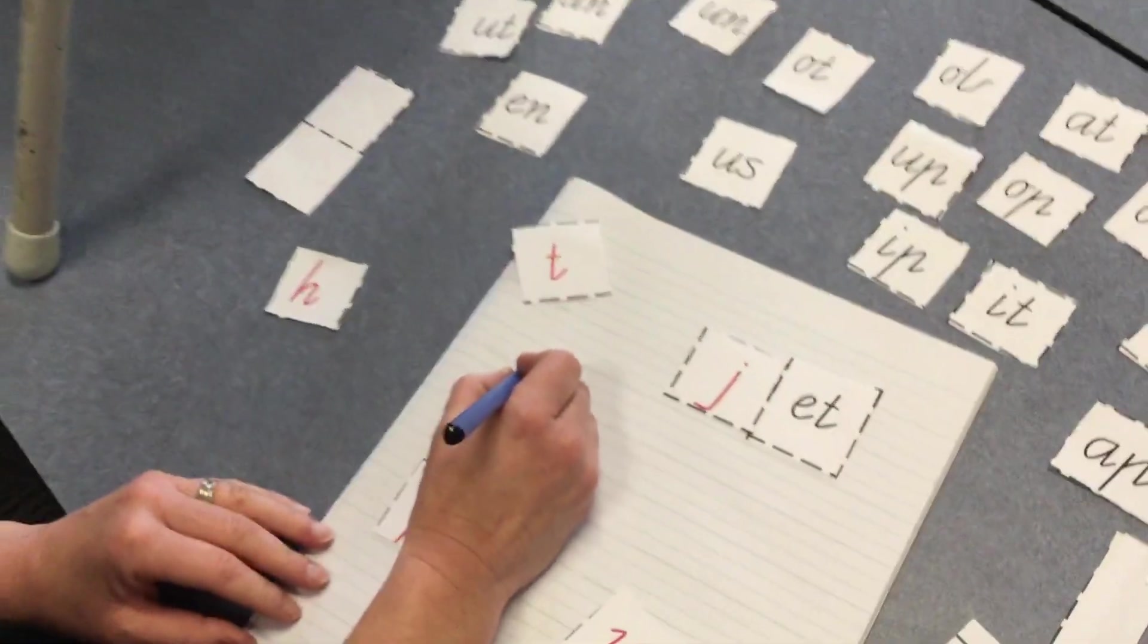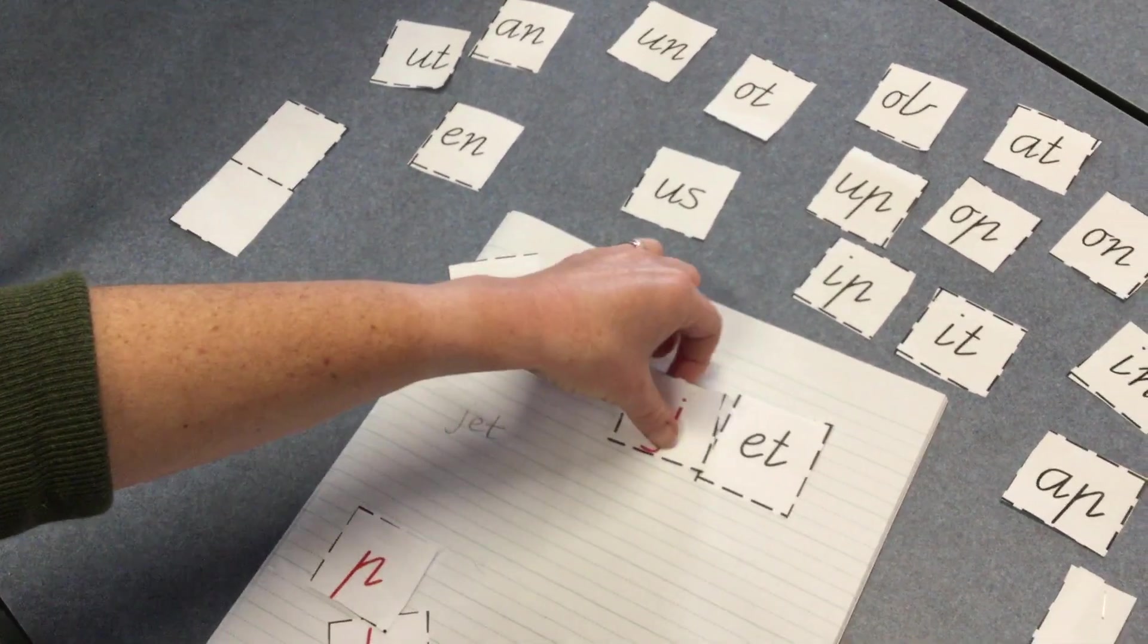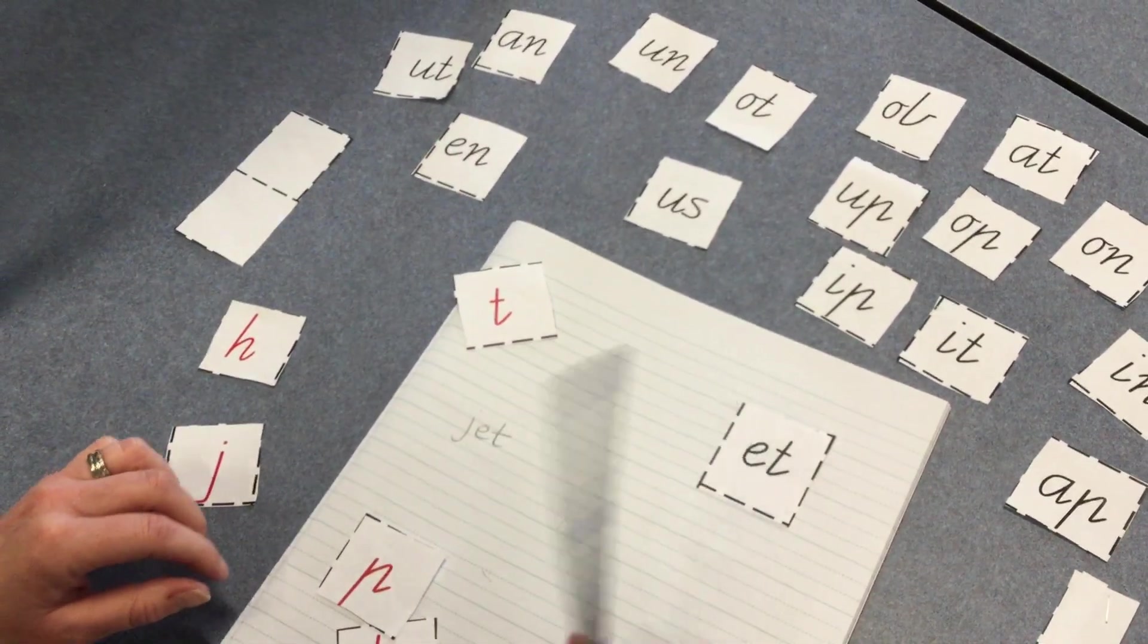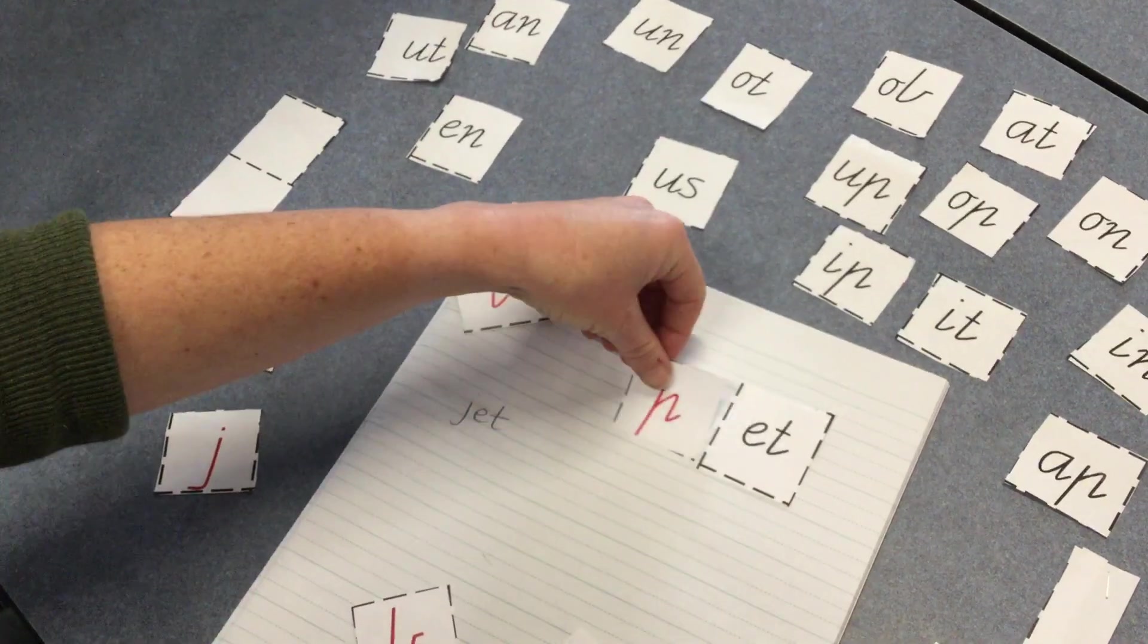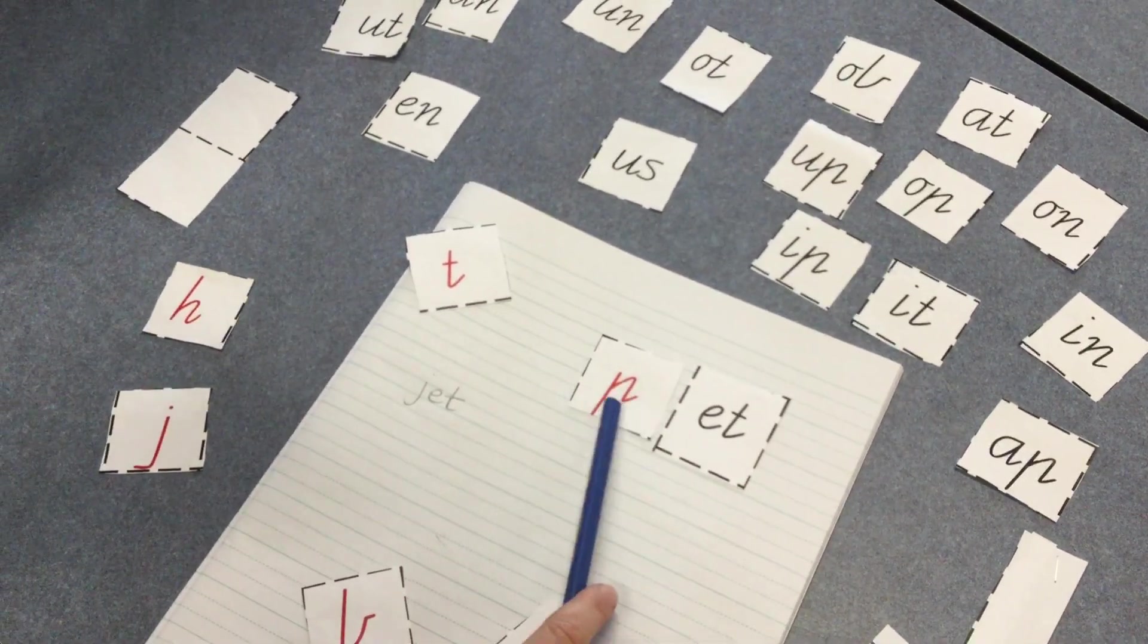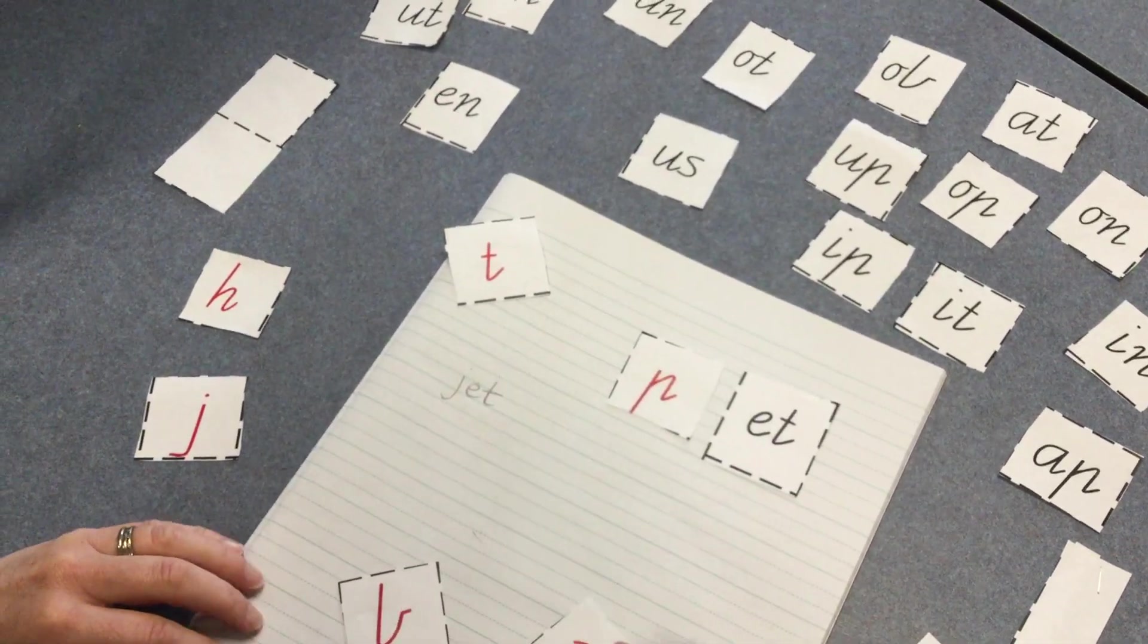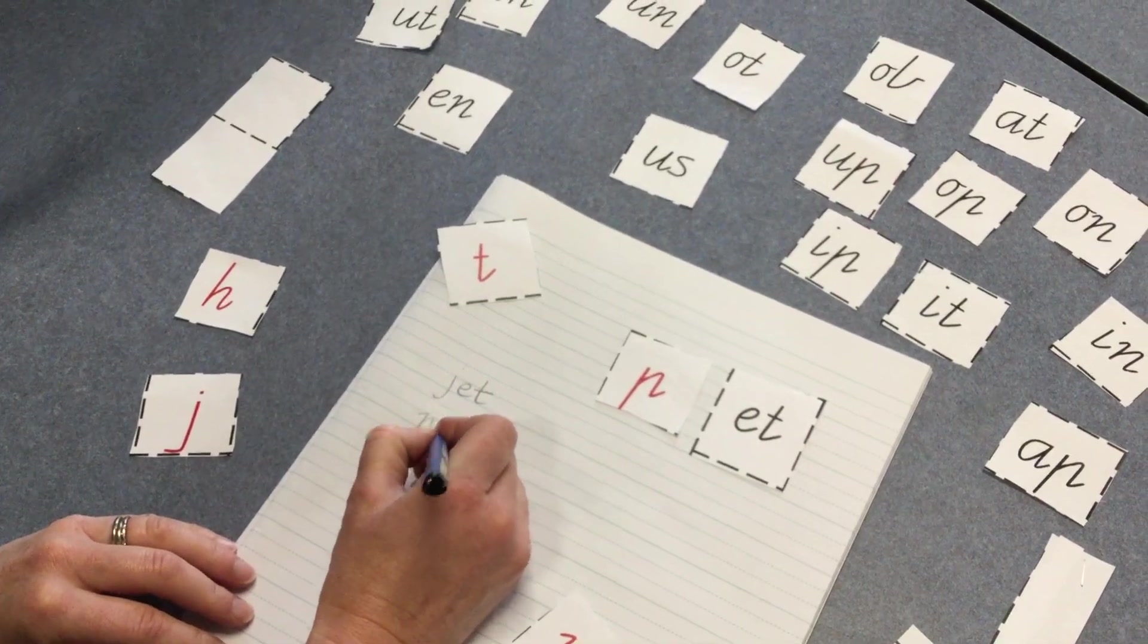Now I can practice writing it into my orange book: jet. I can take my J away and I'll try another one with that sound because I'm practicing that one. I've got a P here: 'p-et, pet, pet.' Is that a word? Yes it is. You might have some pets at home.